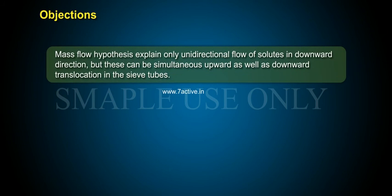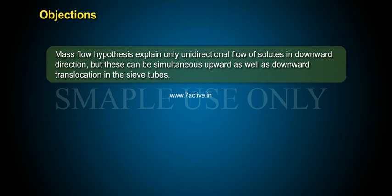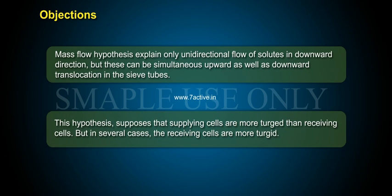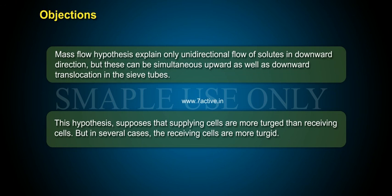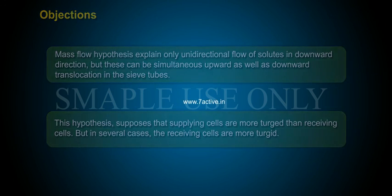Mass flow hypotheses explain only unidirectional flow of solutes in the downward direction, but there can be simultaneous upward as well as downward translocation in the sieve tubes. This hypothesis supposes that supplying cells are more turgid than receiving cells, but in several cases, the receiving cells are more turgid than the supplying cells.